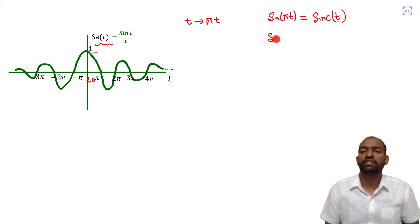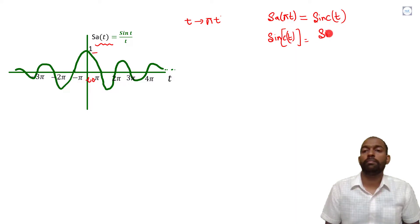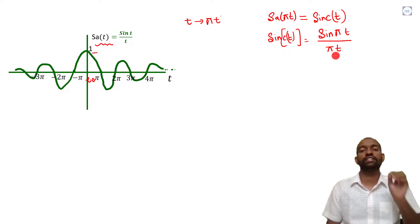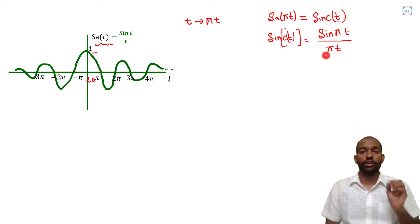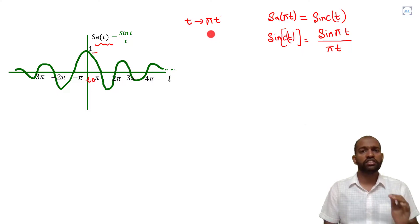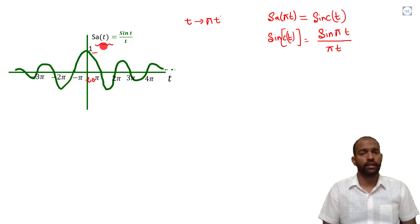Also, we can write: sinc(t) = sin(pi*t) / (pi*t). So, this is our sinc function. As we only replace t with pi*t, its shape will be the same as the sampling signal — peak amplitude at t equal to 0, similar to a sine wave but with amplitude decreasing.